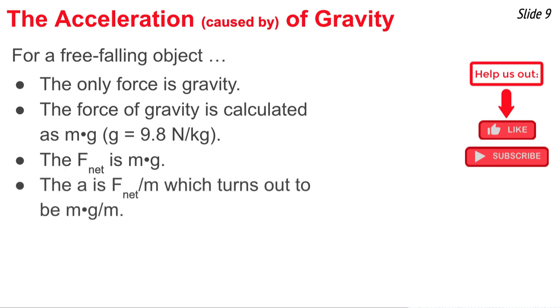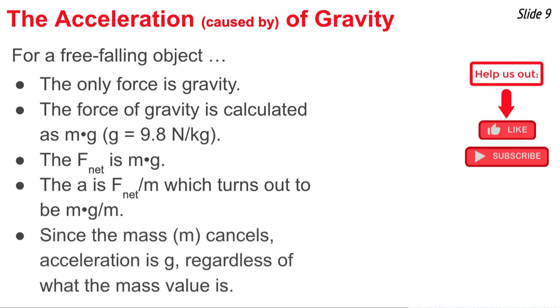Now, this acceleration is the ratio of the net force to the mass, which turns out to be this M times G divided by the M. And since the mass cancels, the acceleration ends up being simply G, regardless of what the mass value is.